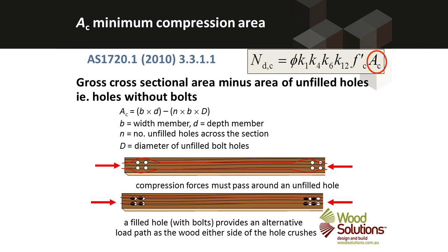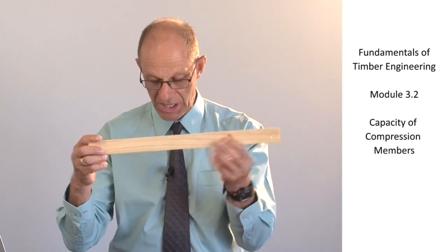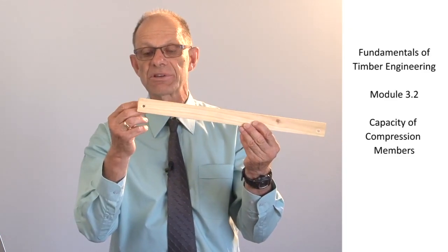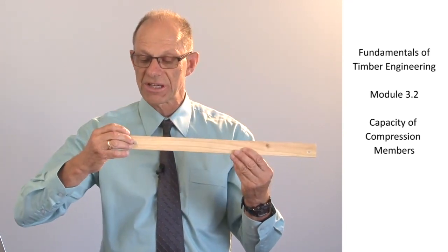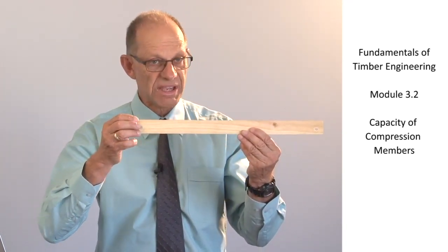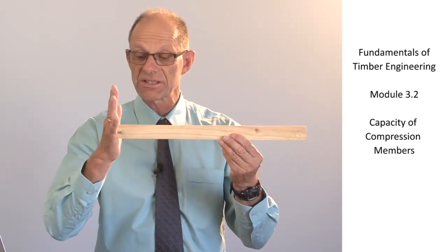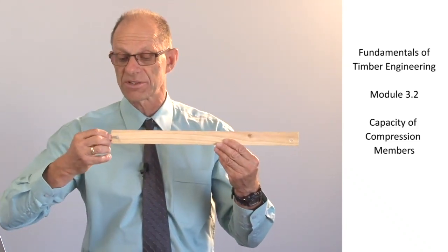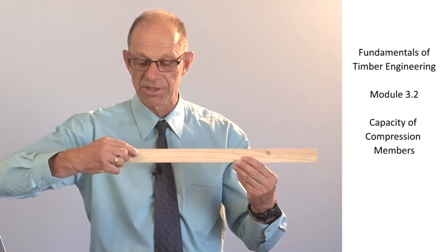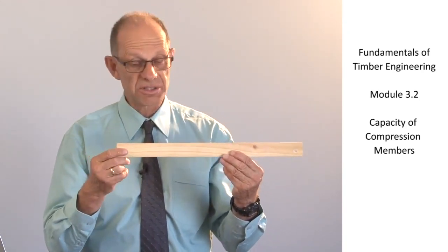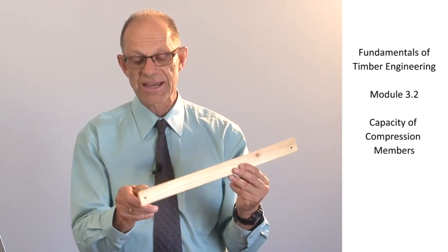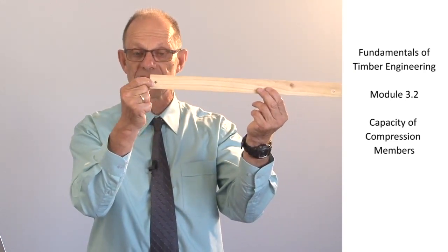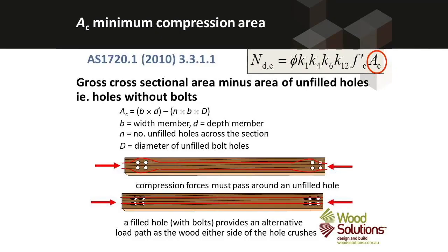The compression area over which the compression failure is deemed to take place is a function of holes in the member. If there is a bolt in the hole, then as compression is applied, it can actually pass through the bolt shank — so bolted holes do not reduce the compressive strength. It's only an empty hole that we would take account of when evaluating the compression area.